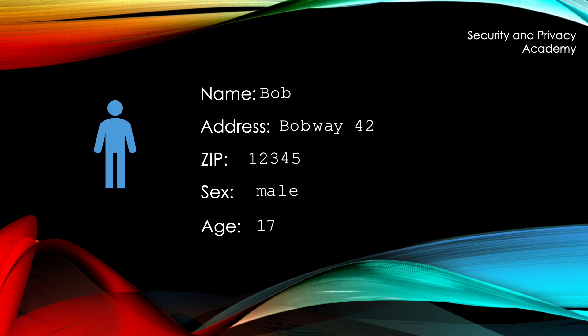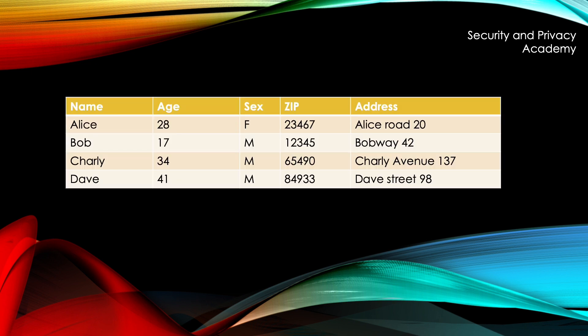We assume again an individual, we call him Bob, with certain characteristics. This individual Bob is a customer at a company. This company has three other customers.